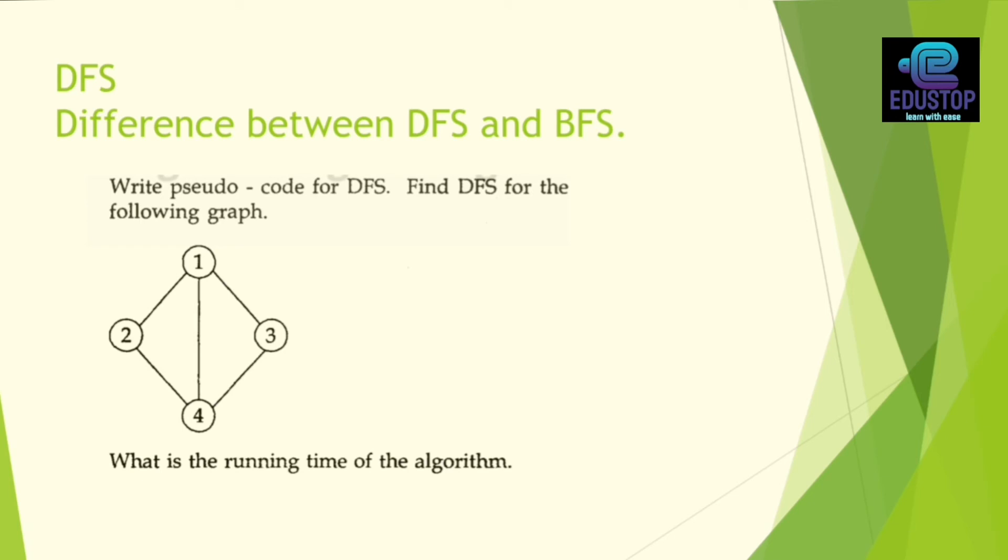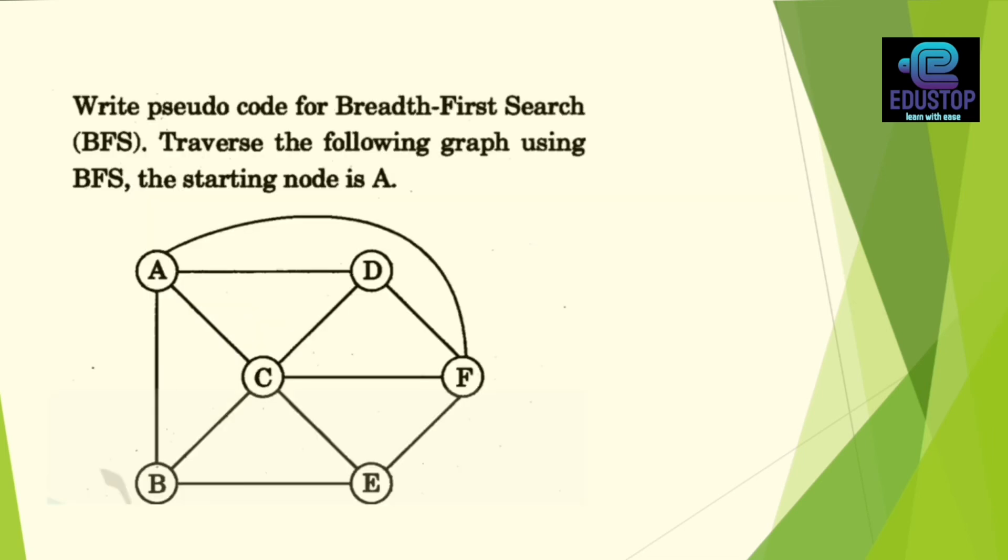Next is the depth-first search question. It has been said that write pseudocode for DFS and you have a graph given in which you have to solve this graph from DFS and you have to tell us the running time. This is our algorithm which will be pseudocode for DFS and it will tell us the running time. The same thing is that we have asked for DFS. This is our graph given and you have to traverse it. This is a given starting node. This is a question too.